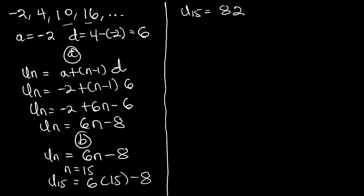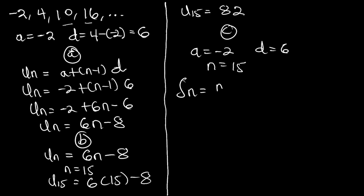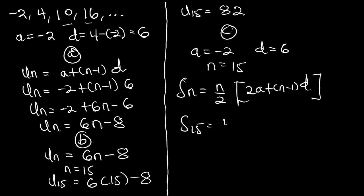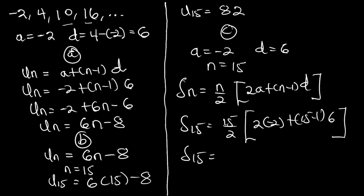The last part is to find the sum of the first 15 terms. We have a equals negative 2, d equals 6, and n equals 15. Using the general formula S sub n equals n over 2 times 2a plus n minus 1 times d, we get S15 equals 15 over 2 times 2 times negative 2 plus 14 times 6. When we compute this we get 600 as our final answer. That is it for arithmetic series — in the next video we will talk about geometric series. Thank you for watching, have a nice day.